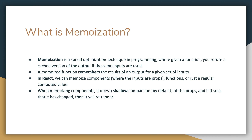In React, we can memoize components where the inputs are the props the component receives from its parent. You can also memoize functions or regular computed values. When memoizing components, it does a shallow comparison of props by default — you can also change this. For non-primitive data structures like objects, arrays, or functions, it only checks if the reference to those objects has changed. Even if the object looks identical, if it's not the same reference in memory, React thinks you passed new props and will re-render.